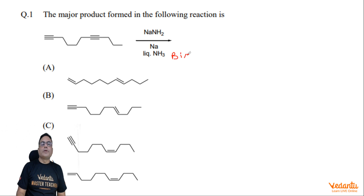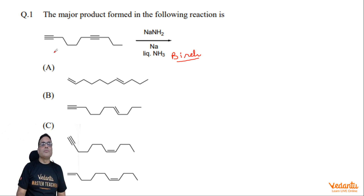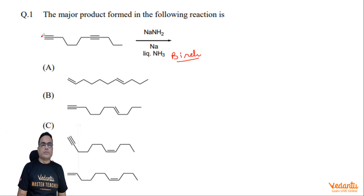Birch means it will reduce the non-terminal alkyne to trans-alkene. And terminal alkyne will be unaffected. NaNH₂ at most can react with the acidic H of the terminal alkyne, and after treating with liquid ammonia, that H will come back again.